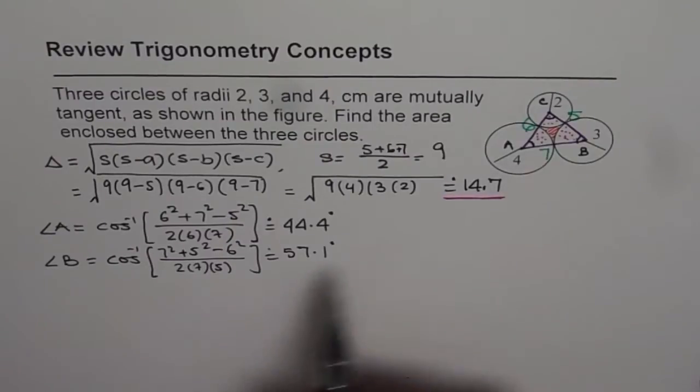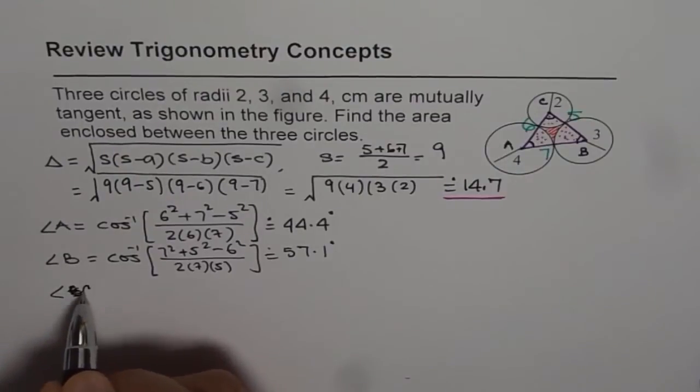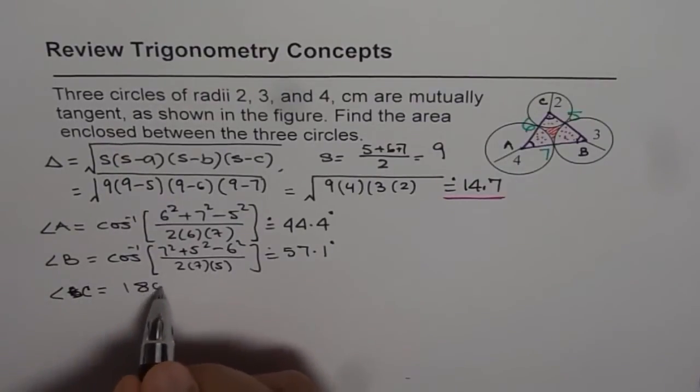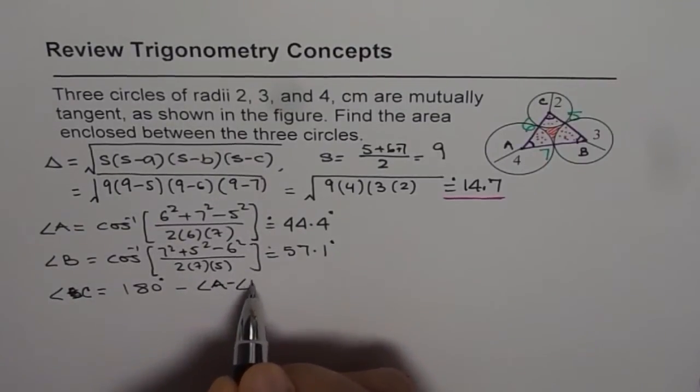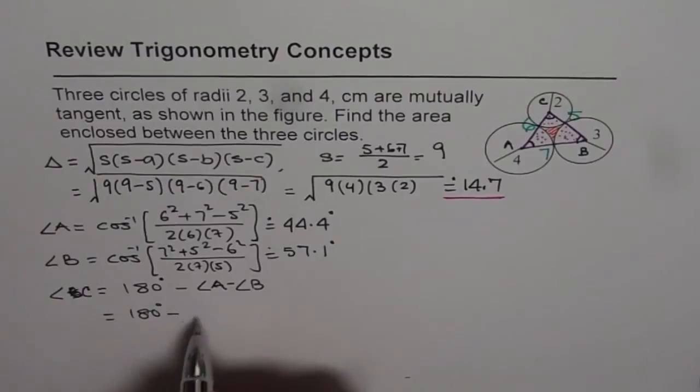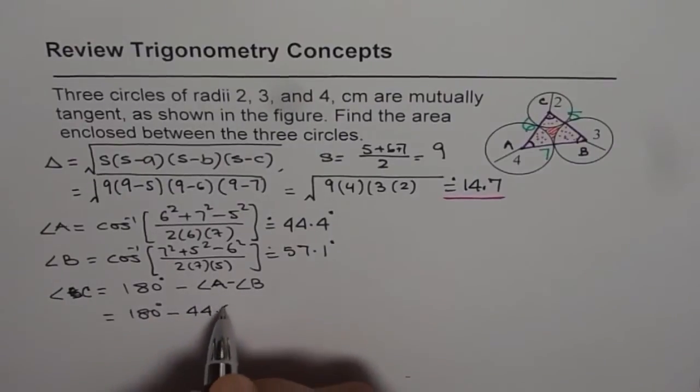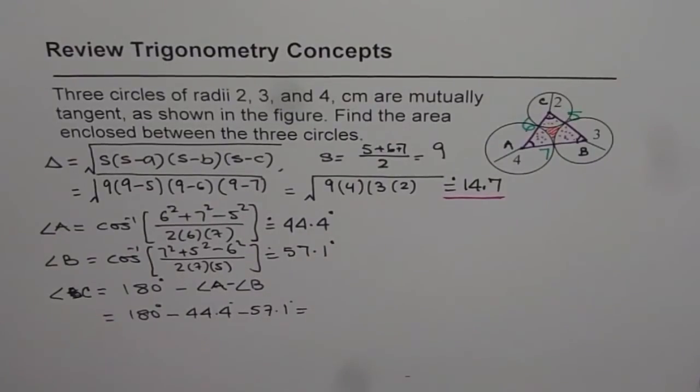Now, what is angle C? You can use cosine law or properties of triangle. So we are finding angle C now. Angle C can be 180 degrees minus angle A minus angle B. So let us write down it is 180 degrees minus 44.4 take away 57.1. That gives us a value of 78.5.